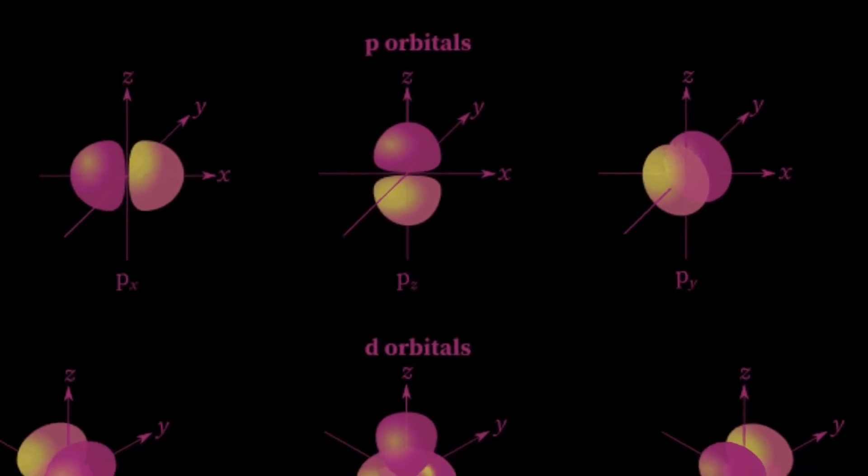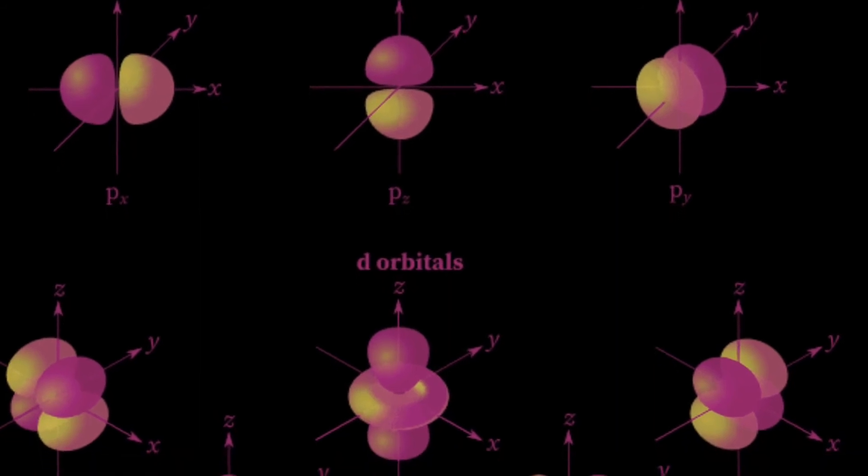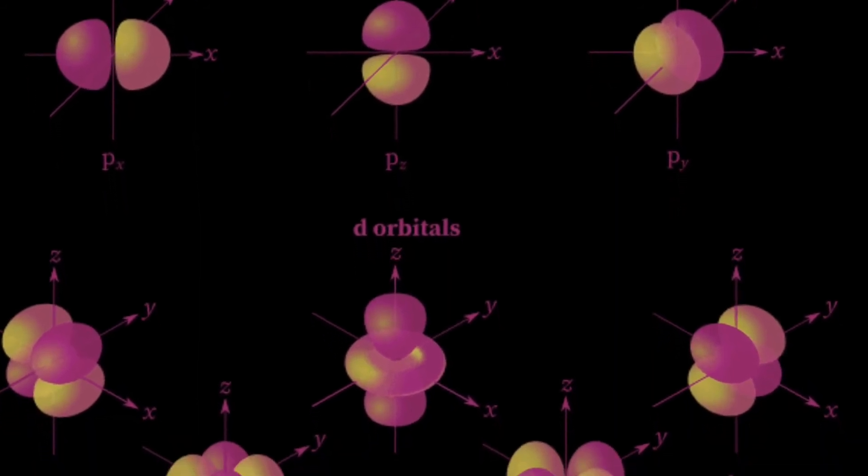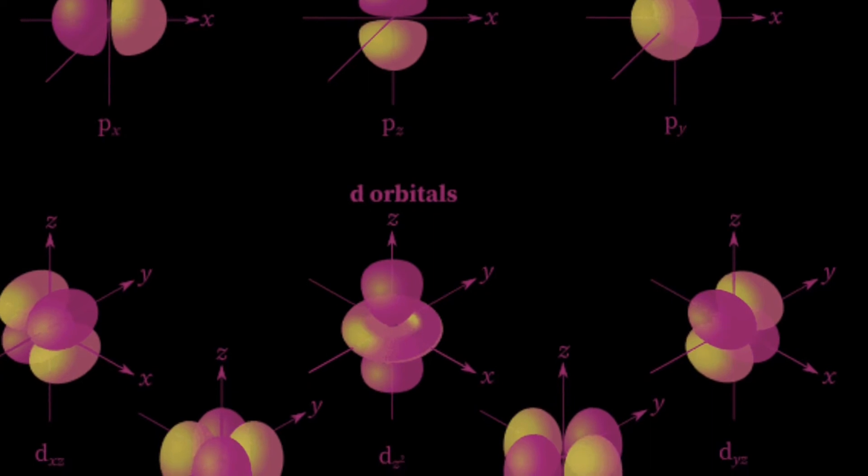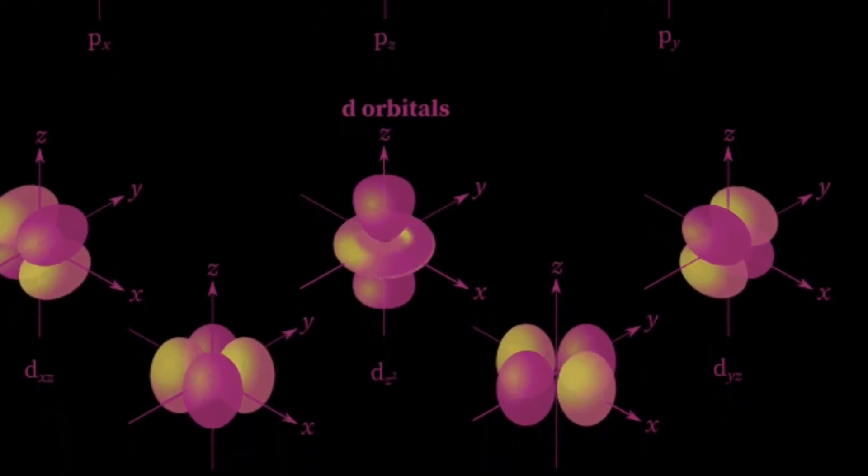However, for the other types of orbitals, such as p, d, and f orbitals, the electron's angular position relative to the nucleus also becomes a factor in the probability density. On screen now are some resulting orbital shapes.